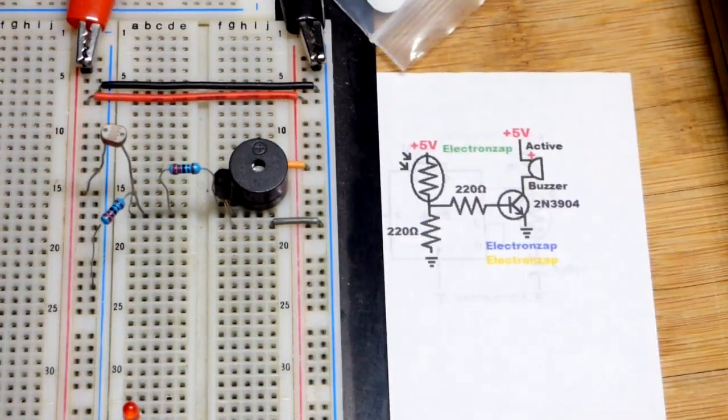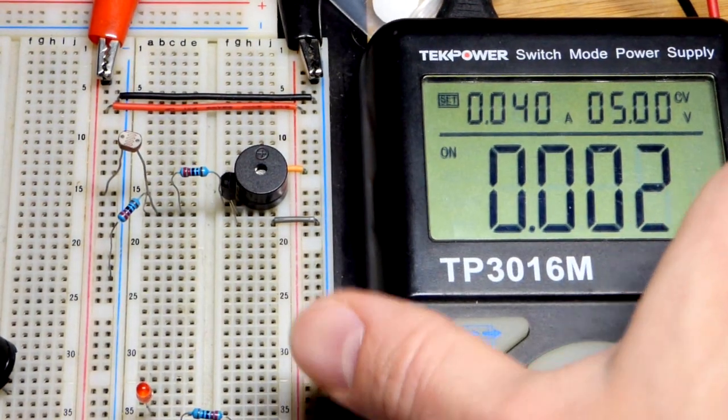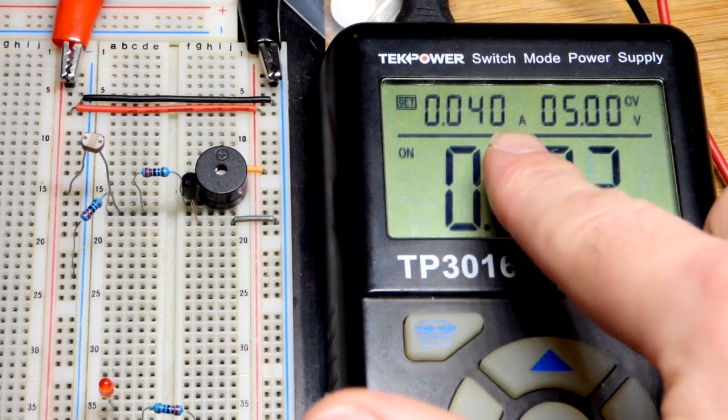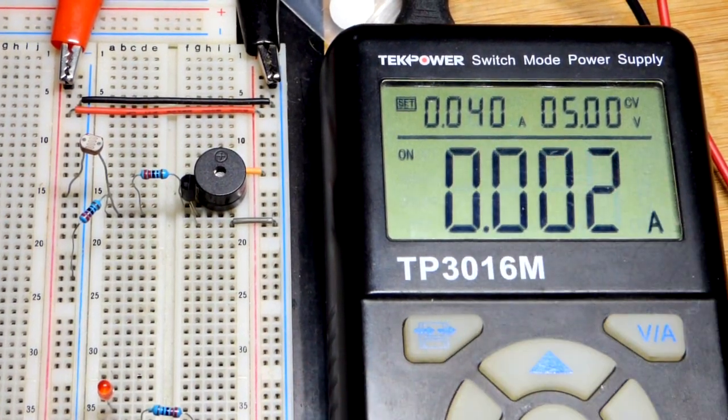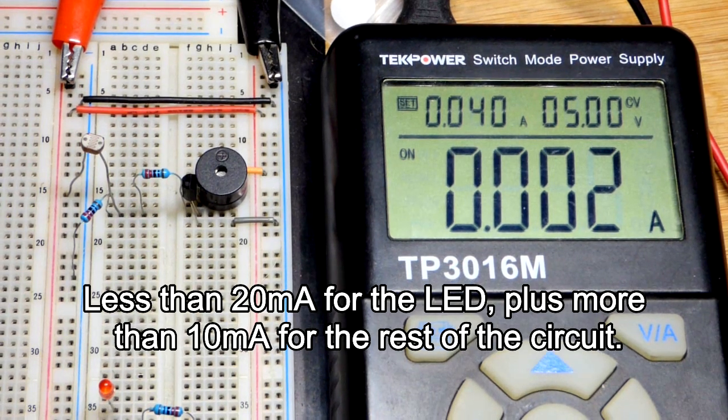Now another thing we're going to do is I suspected I didn't give enough current in an earlier video. We needed more than 0.03 amps, 30 milliamps for the LED and I didn't check the buzzer yet.